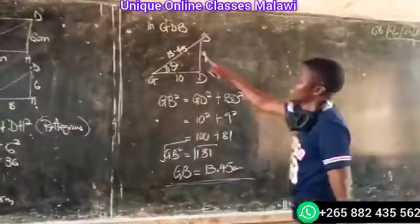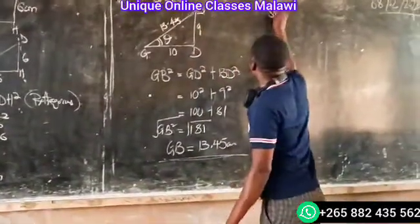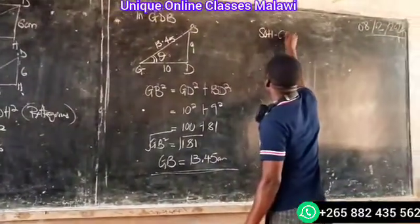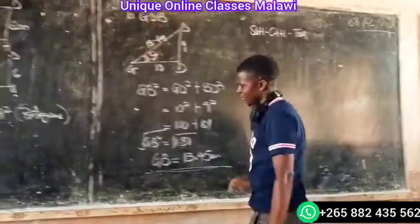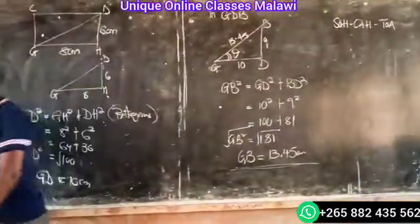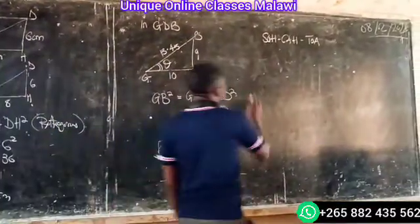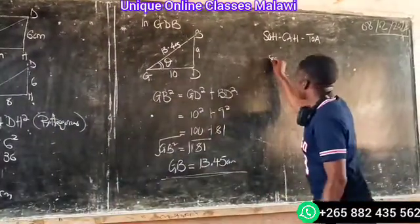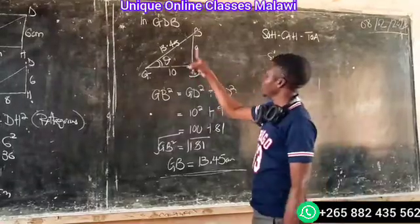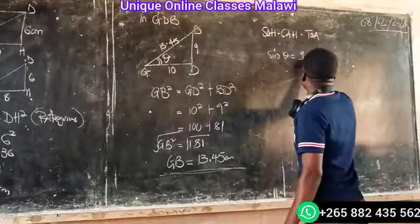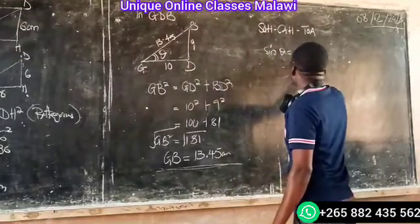Since we know the sides, we will use trigonometry in this area. So using the ratio, the angle D equals 9 divided by 13.45.